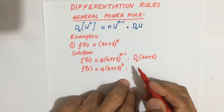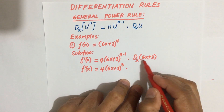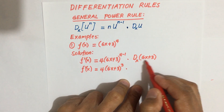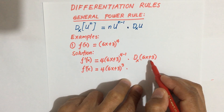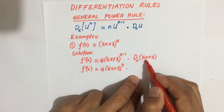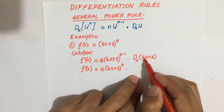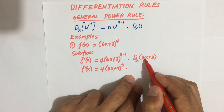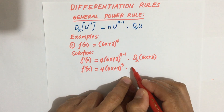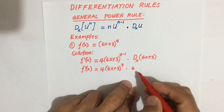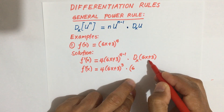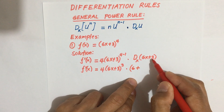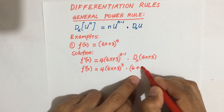Now we apply the sum rule to take the derivative of 6x plus 3. Using the constant multiple rule, the derivative of 6x is 6. And 3 is a constant, so the derivative of a constant is 0.